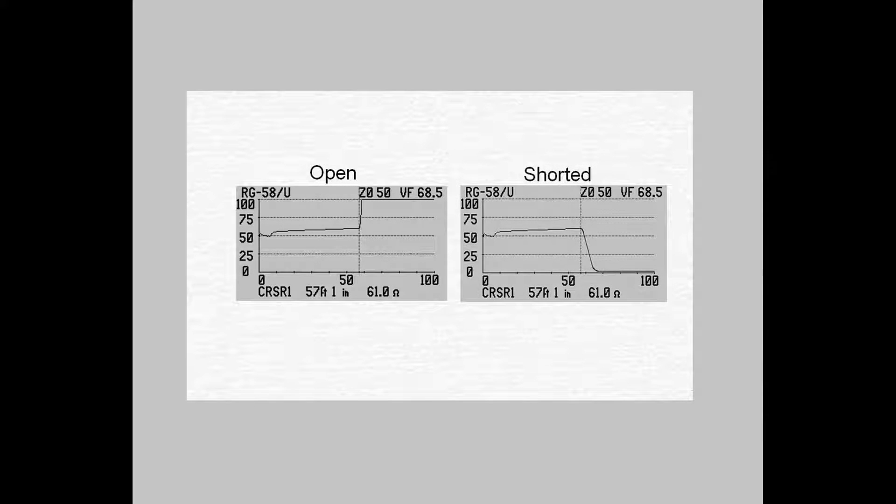The screen on the TDR will give you a graphical trace. It'll look something like this if you have an open, or something like this if you have a short. The actual problem is shown right here. Reading the scale on the bottom, you'll see that it's approximately 56 feet out from the end of the wire you're measuring. Later in this video, I'll go into greater detail on how to read this screen.